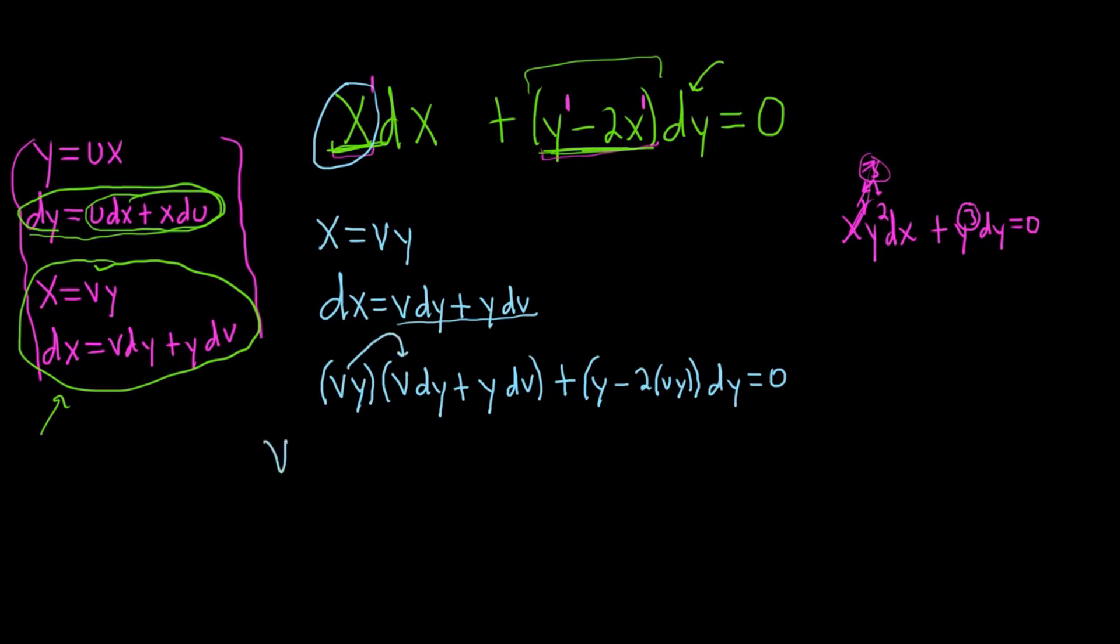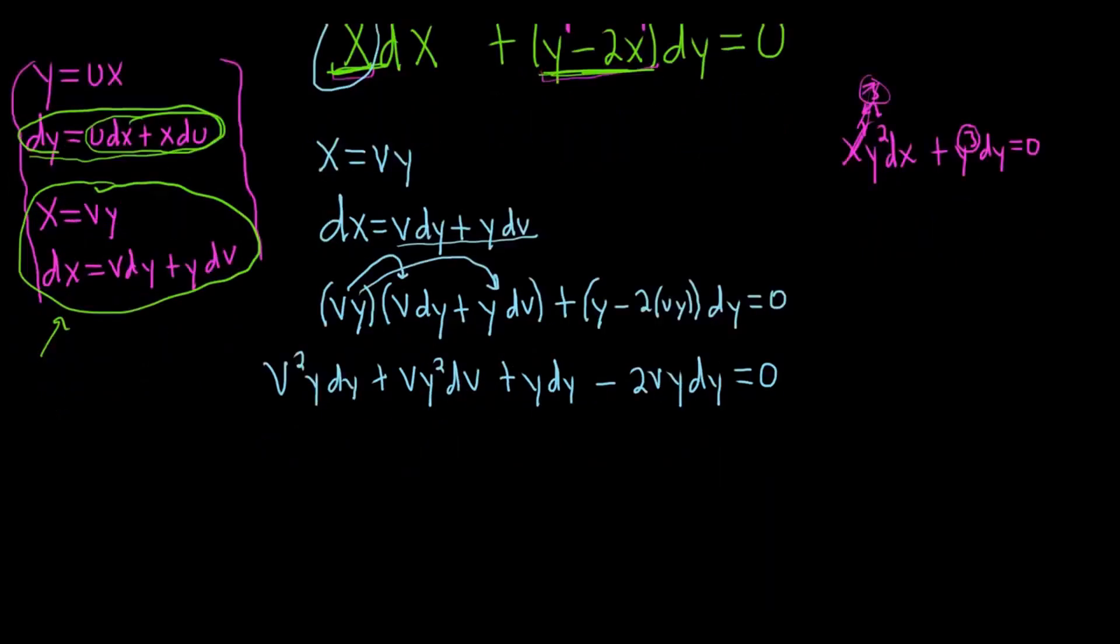So this times this, that's going to give us v²y dy plus, and then this times this, will give us vy² dv. So vy² dv. And then y times dy, so plus y dy, minus 2vy dy, and this is equal to 0. So far, so good. But again, always be extra cautious when you're doing the homogeneous problems. I feel that these are the hardest ones that are typically studied at the beginning of a differential equations course. In my opinion, these are the hardest ones. Some people think Bernoulli's are harder, but I think these are tough.